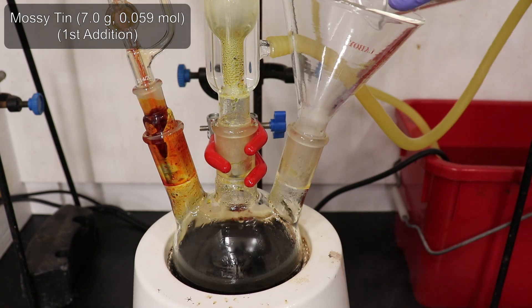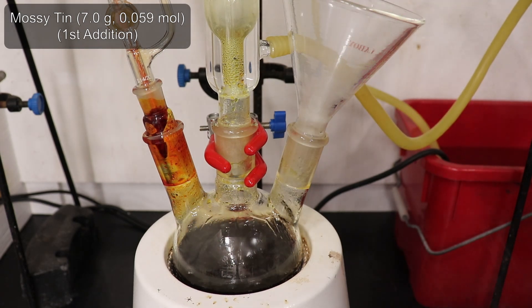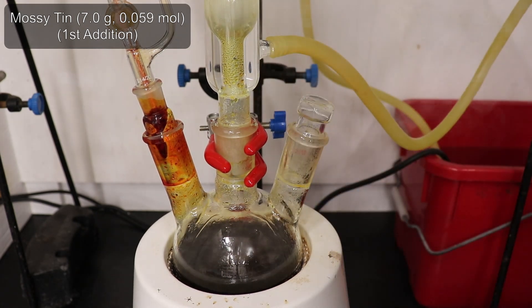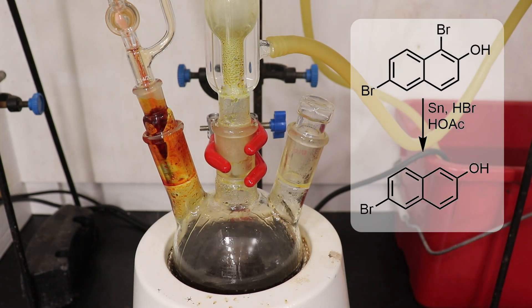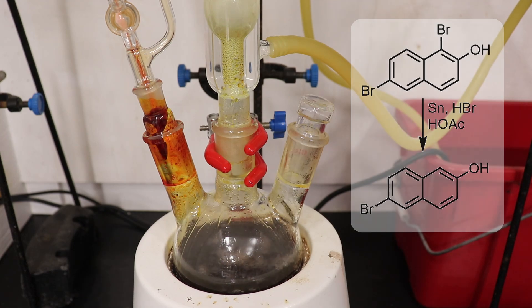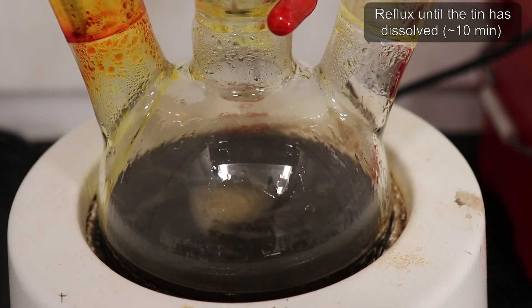The tin addition is broken into three separate portions, since the reduction is exothermic and releases hydrogen gas. On opening the flask, hydrogen bromide gas is released, so I quickly added the 7-gram tin portion and resealed.